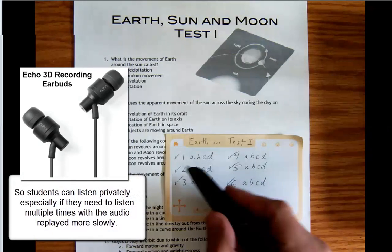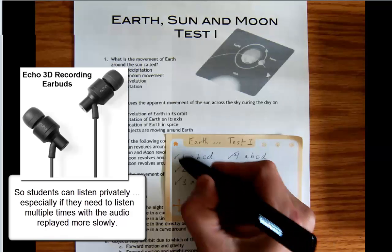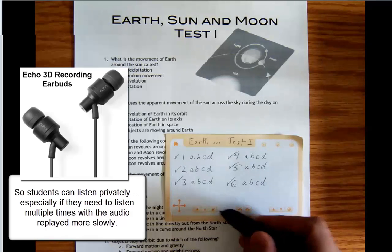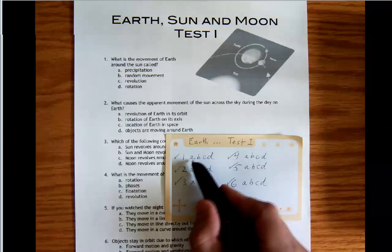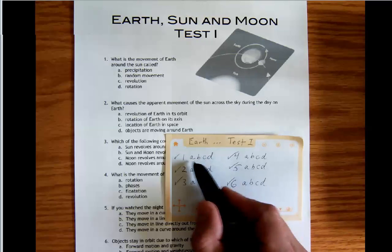And the idea is if they want to listen to a particular question, they would just tap on the check mark. What is the movement of Earth around the Sun called? And if they want, they can use the controls to pause or to replay. And then if they want to hear a particular answer, they can just tap on the letter for that answer and hear that answer read out loud again to them.